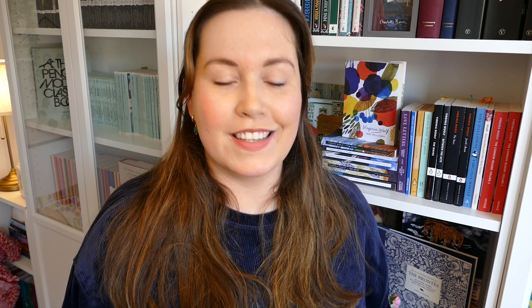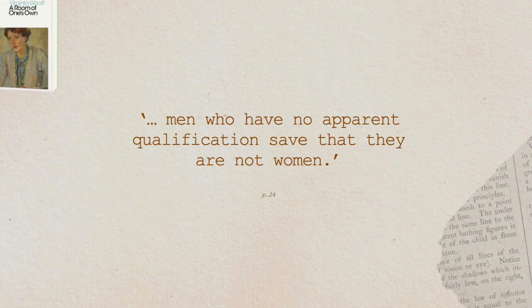When we get to chapter two, the main question is: why was one sex so prosperous and the other so poor, and what effect has poverty on fiction? She talks about men writing about women, and here we get a little bit of female rage. She says men who have no apparent qualifications, save that they are not women, use that as a qualification to write about women and no one opposes that. She also looks at why men are so angry at women — why should men with all their power be so angry? She talks about different professors claiming the inferiority of women and compares this to how the rich are always afraid the poor will take their money. Are men afraid that women will steal their power? Men focus a lot on their superiority and how to maintain it.